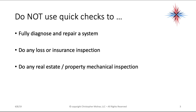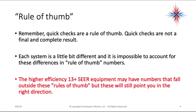I'll try to identify them as we go through these. Remember, a rule of thumb is just an average. Quick checks are not a final and complete result. Each system is going to be a little bit different, and it's impossible to account for these differences in rule-of-thumb numbers. This is important: higher efficiency, 13-plus SEER equipment may have numbers that fall outside of these rules of thumb, but these will still point you in the correct direction.